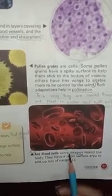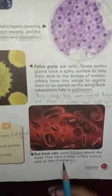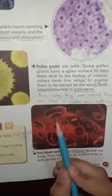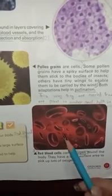Then we have red blood cells. Red blood cells carry oxygen around the body. They have a large surface area to pick up lots of oxygen. As you can see in the diagram, they have a very large surface area so that they can pick up a lot of oxygen and carry it to other parts of the body easily.